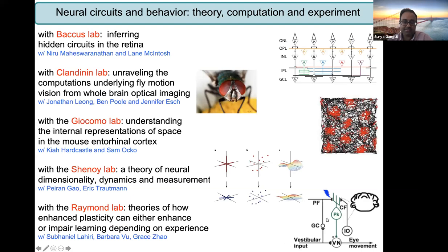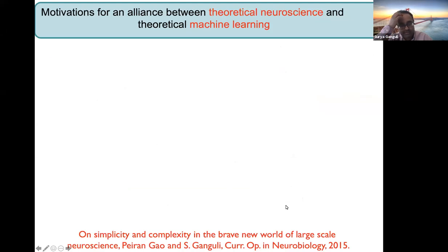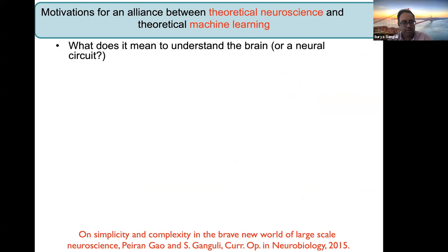If we step back from all of this work, there are many reasons for a very interesting alliance between theoretical neuroscience and theoretical machine learning, and even applied machine learning. That alliance is motivated by the following logic: we'd like to understand how the brain works and maybe recreate the capabilities of the brain in artificial systems.